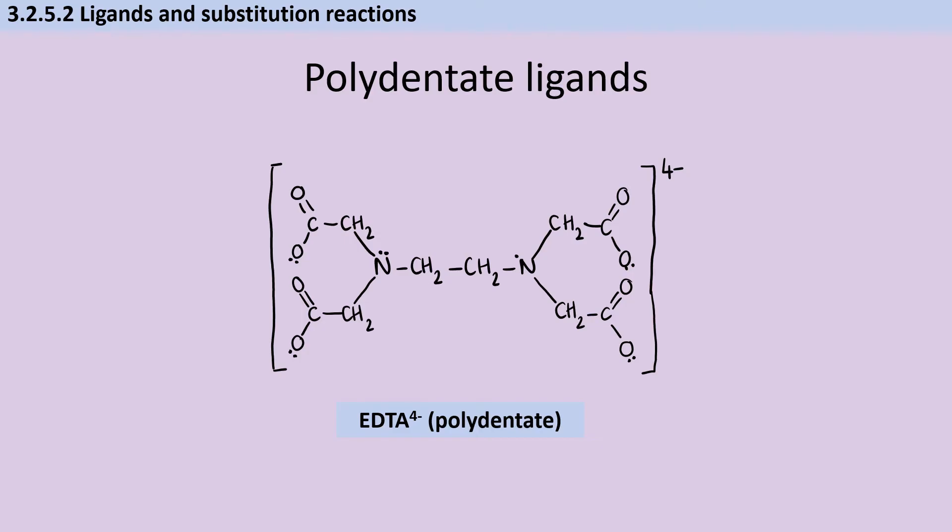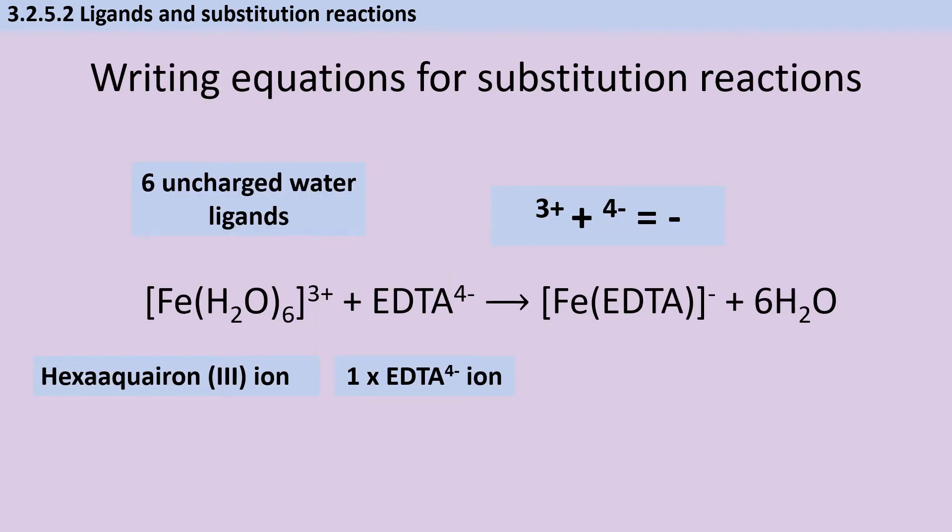EDTA, or ethylenediamine tetraacetic acid, is a polydentate or multidentate ligand that forms six dative bonds using nitrogen and oxygen atoms with lone pairs. You should be able to write substitution reactions for any bidentate or polydentate ligands replacing monodentate ligands in a complex.